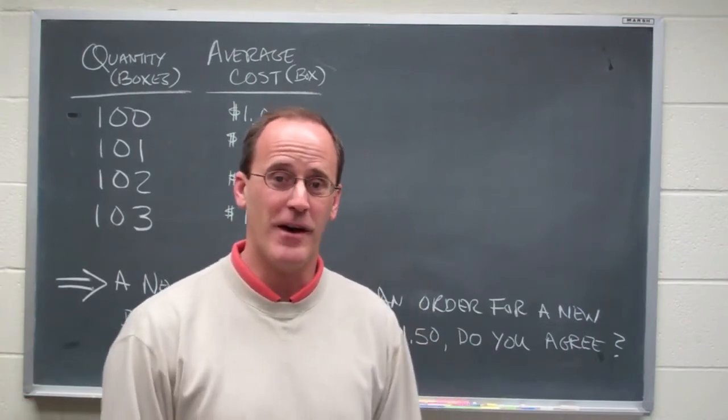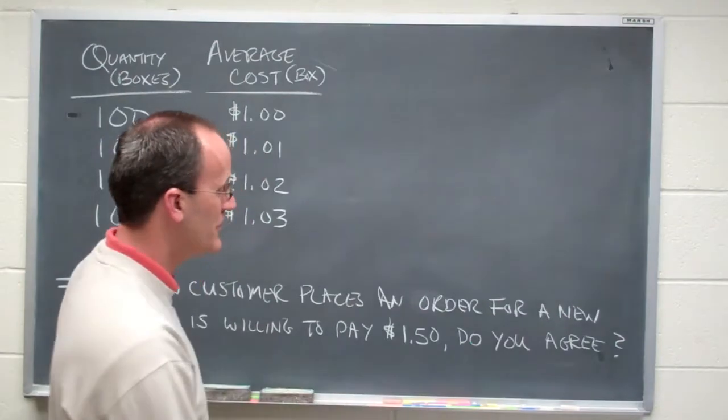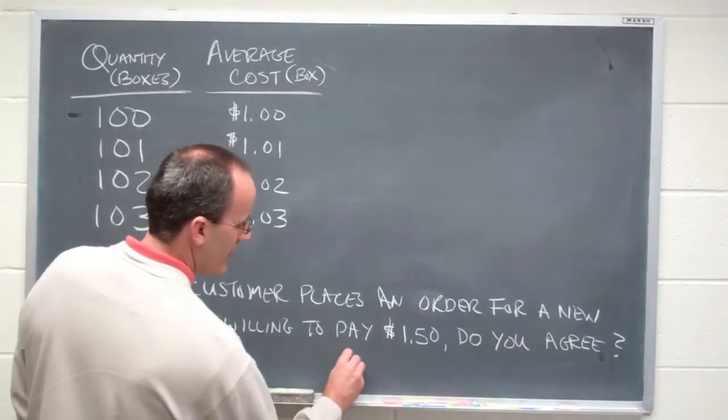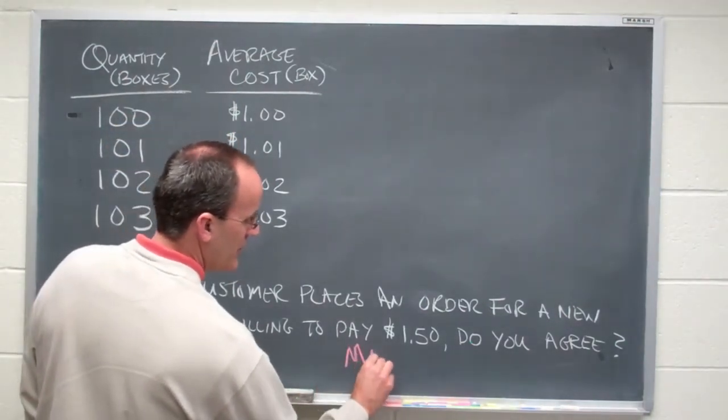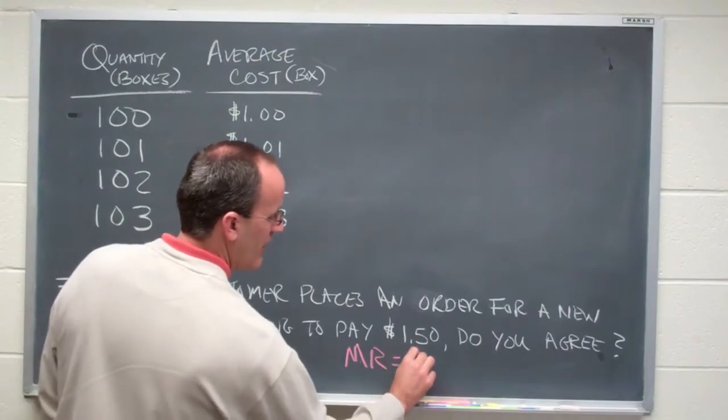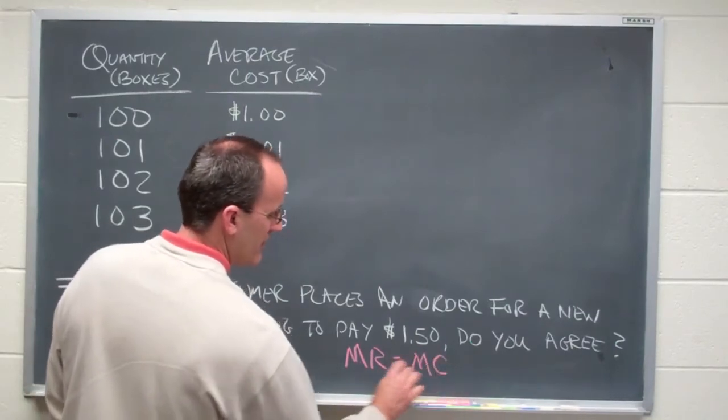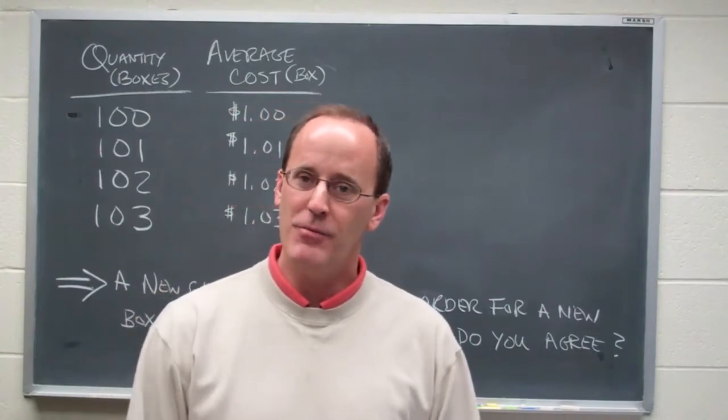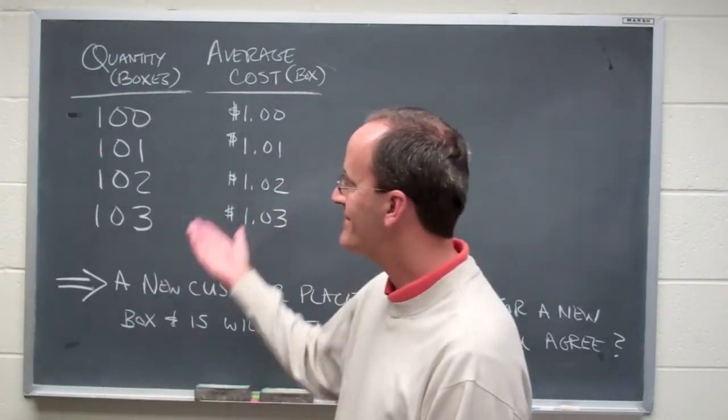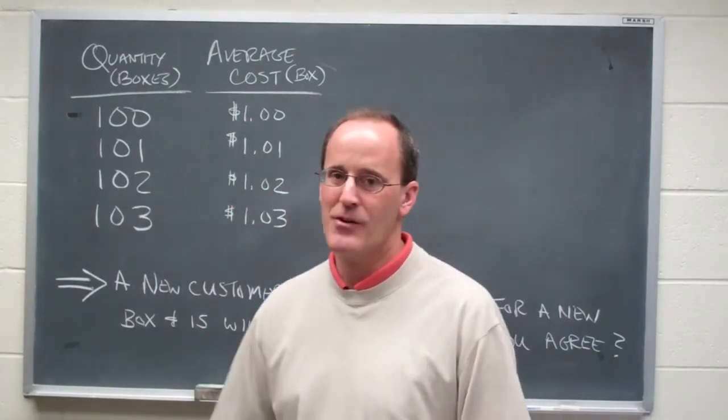Let's use the profit maximizing rule. So in case you've forgotten that, we'll just start with that right here as a reminder. What a business is supposed to do is find a point where marginal revenue equals marginal cost. And you've probably noticed on the board behind me, I don't have marginal cost.